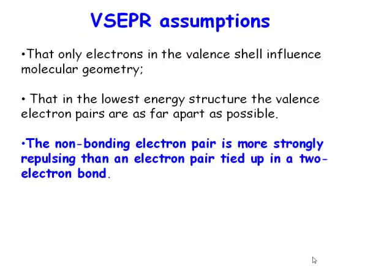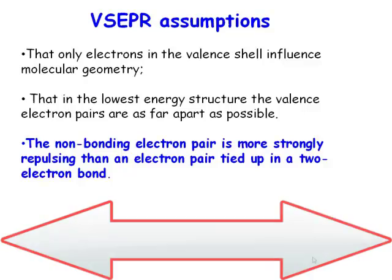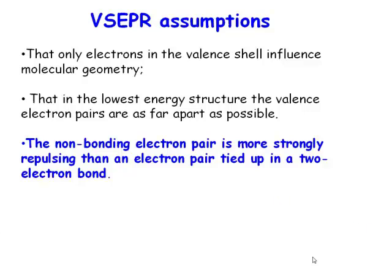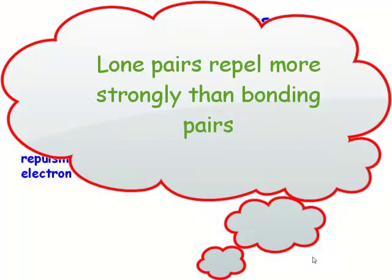The only electrons in the valence shell influence molecular geometry, and in the lowest energy configuration these groups are as far apart as possible. Non-bonding pairs of electrons — lone pairs — because they are closer to the central atom, actually repel more strongly than bonding pairs.